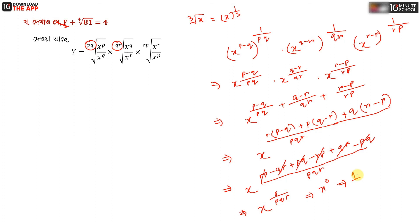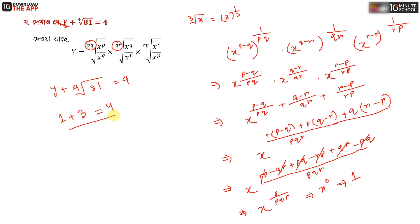For the next problem, y plus 4 root 81 equal to 4y, so y equal to 1. And y to z equal to 25, and z equal to 10.